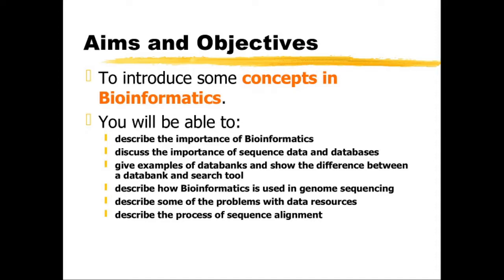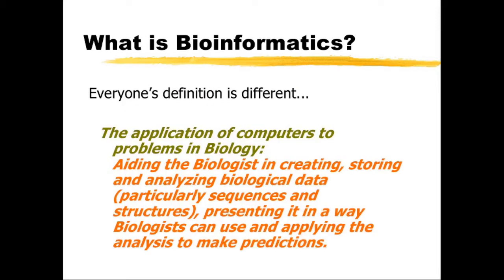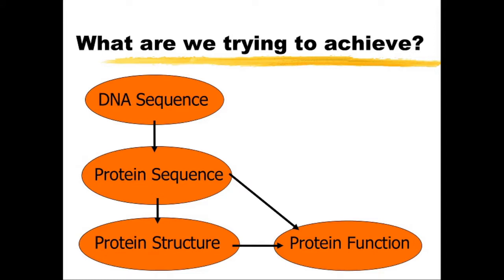You should also be able to describe how bioinformatics can be used in genome sequencing and describe some of the problems with data resources and the process of sequence alignment. What is bioinformatics? Everyone's definition is different, but a simple definition is the application of computers to problems in biology. We can expand that to say it involves aiding the biologist in creating, storing, and analyzing biological data — particularly sequences and structures, and these days also various types of omics data, like genomics, transcriptomics, and proteomics.